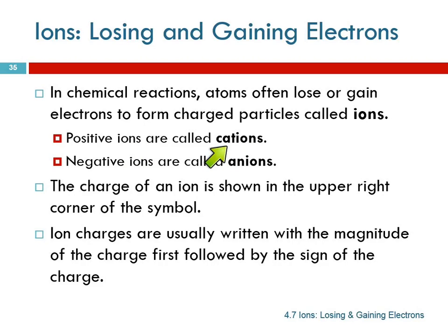We have special names for these. Positive ions are called cations, not cations, cations. And negative ions are called anions, not onions. The negative ones, there's an extra N in anion. Cations, if you like cats I have positive feelings for cats, so cations are positive.